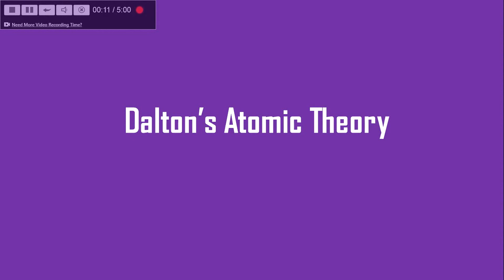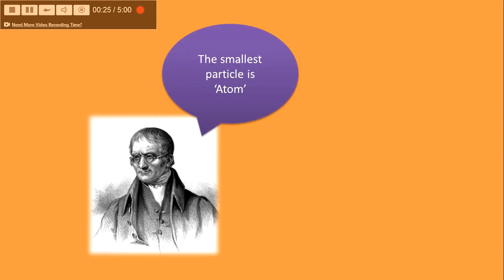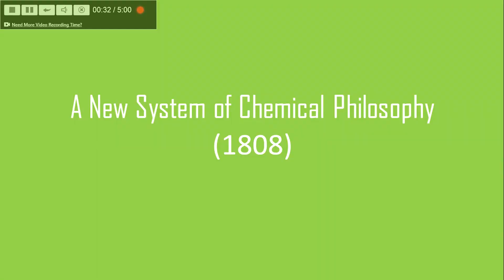Dalton's Atomic Theory. We know that each and everything which we see around us is matter. A very usual question which comes to mind is: what is matter made up of? This question was first answered by chemist John Dalton, who said that the smallest particle is the atom — meaning every form of matter is made up of atoms. He published his ideas in a book,